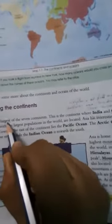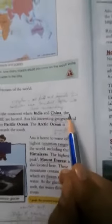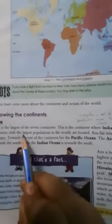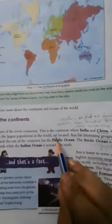Now, knowing about our continents — Asia is the largest of the seven continents. Asia is the continent where India and China, the countries with the largest population in the world, are located.